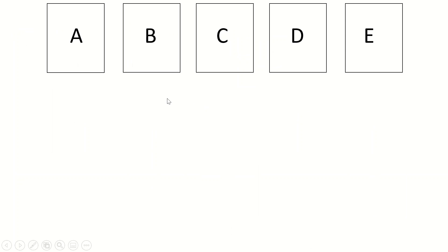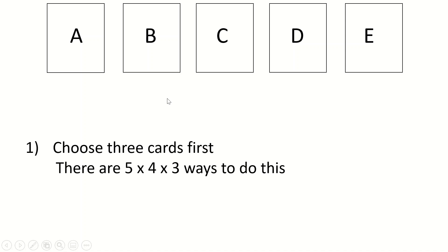Firstly, we've got to choose three cards. You've got to choose whichever three cards you want to start with. How many ways are there to choose three cards just randomly? Well, you've got a selection of five cards, which means your first choice you have five options. Once you've taken a card — say you've chosen B as your first card — there are four cards left: A, C, D, and E. So you have four options to choose your second card from. Then for the third card, two of the cards are gone, so you have three cards left to choose from. So there are five times four times three ways of choosing a selection of three cards from five.